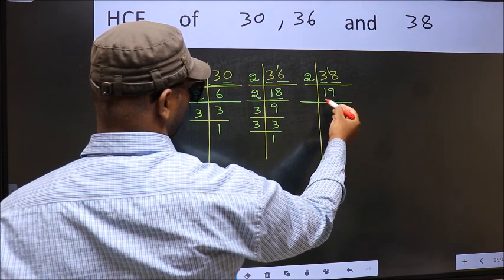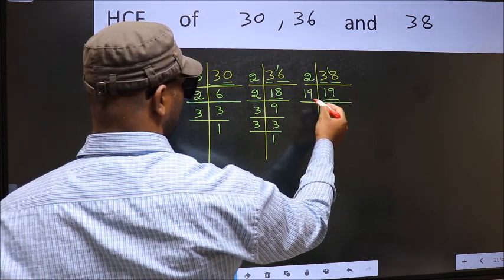2 times 9 is 18. Now 19 is a prime number so 19 times 1 is 19.